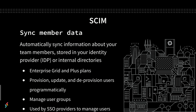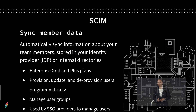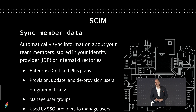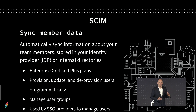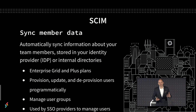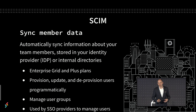Finally, there is our SCIM API. SCIM may be something you're already familiar with — it's an open standard that's been around for almost a decade now. SCIM is available on both our Plus Plans and on Enterprise Grid. It's a RESTful API and it supports the standard REST verbs. With SCIM, you can automatically sync the data about your team inside of Slack with an identity provider that you might already be using or some sort of internal user directory. The real power is that you can provision and deprovision team members, update their profile information, and manage user groups — all programmatically.